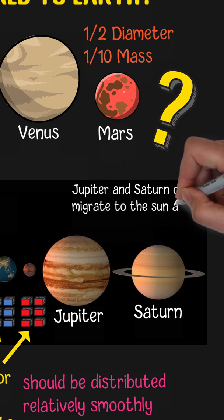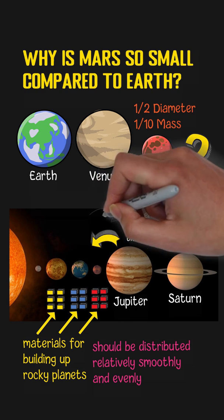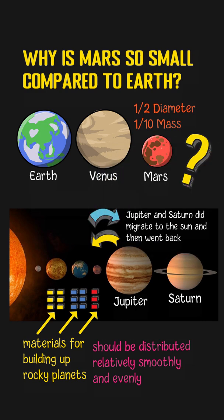Scientists believed that Jupiter and Saturn did migrate to the Sun shortly after they formed and then went back once again. This process swept out lots of material around the region of Mars, which caused the planet-forming material to be depleted in this area.